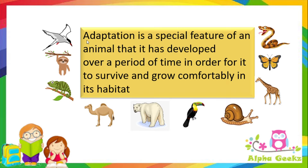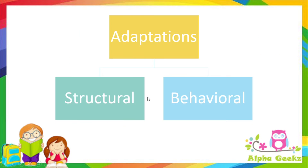Hello kids, welcome to Alpha Geeks! Today we will be continuing with our module on adaptations of animals. Adaptation is a special feature of an animal that it has developed over a period of time in order for it to survive and grow comfortably in its habitat. These features or characteristics allow the animal to find food, to protect itself from enemies, to communicate, and to reproduce.